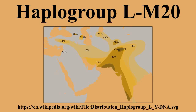Researchers make a case for an indigenous origin of L M76 in India, arguing that the spatial distributions of both L M76 HG frequency and associated microsatellite variants show a pattern of spread emanating from southern India. By linking Haplogroup L M76 to the Dravidian speakers, they simultaneously argue for an Indian origin of Dravidian languages.